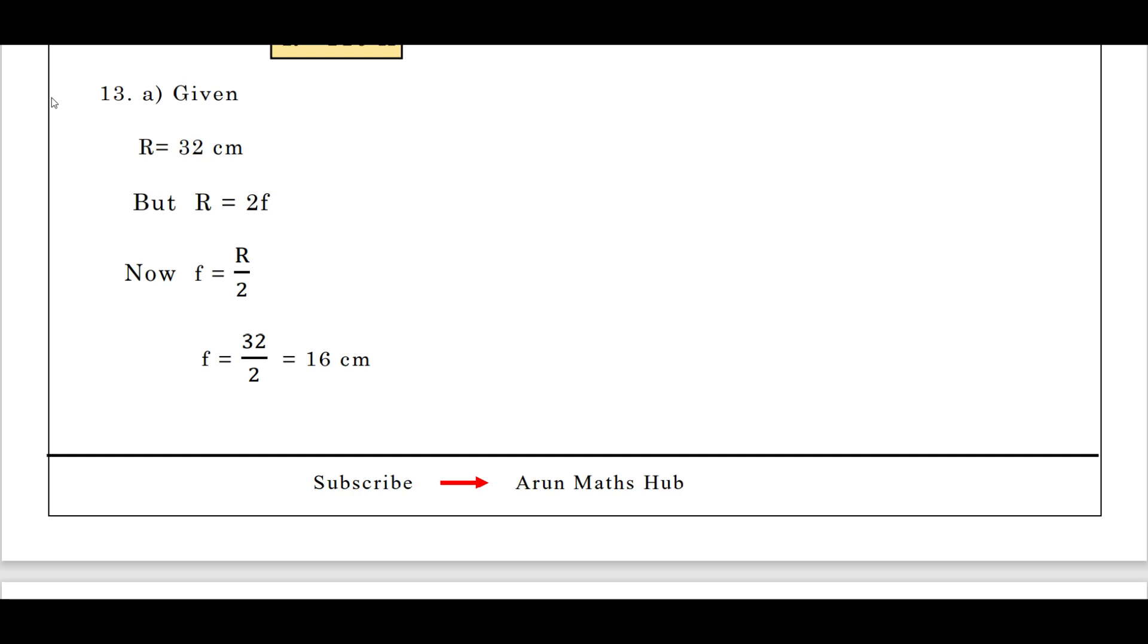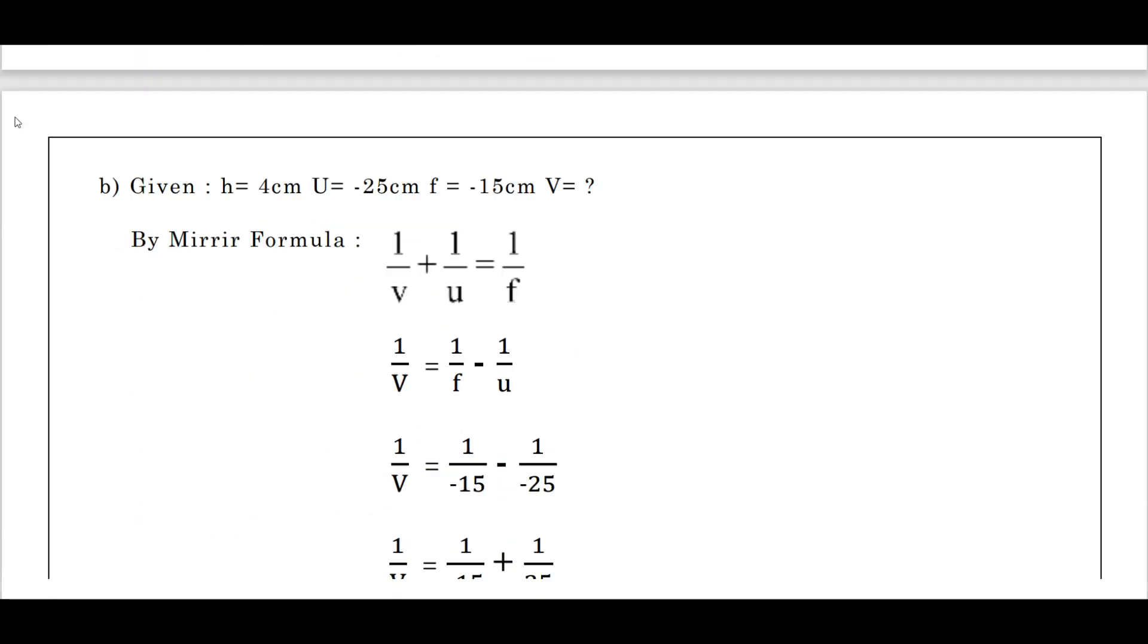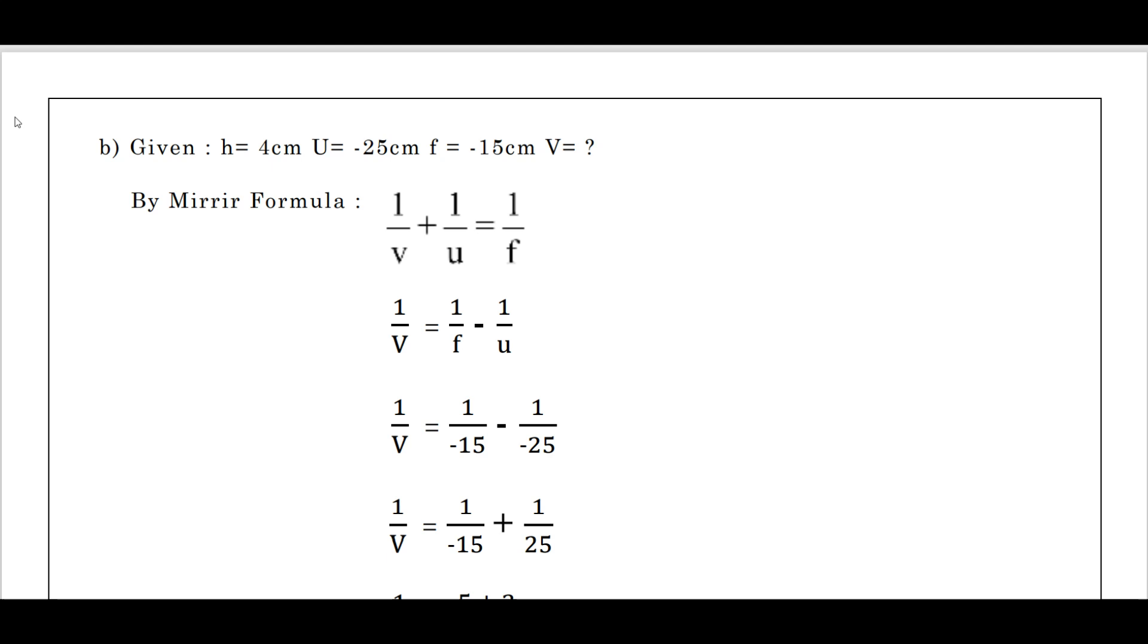Question B: an object 4 centimeter in height is placed at 25 centimeter in front of a concave mirror of focal length 15 meters. At what distance from the mirror should a screen be placed in order to obtain sharp image? We should find out the image distance by using mirror formula. That is 1/v + 1/u = 1/f. We need to find out image distance. Therefore, 1/v = 1/f minus 1/u. Now 1/v = 1/(-15) - why minus 15? Because it is on the left side, it is placed in front of a concave mirror.